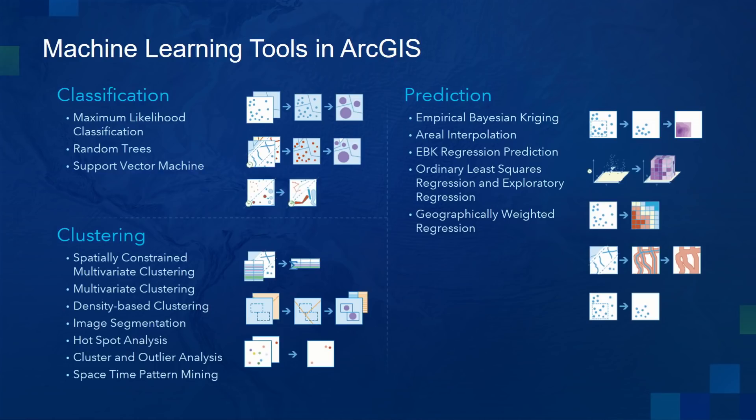With classification, you can use support vector machine algorithms to create land cover classification layers. Another example is clustering — we have a new density-based clustering tool that allows you to process large quantities of input point data into meaningful clusters from sparse noise. And with prediction, geographically weighted regression allows you to use geography to calibrate the factors that help you predict.